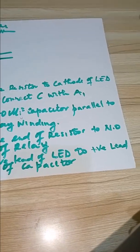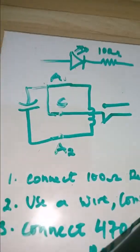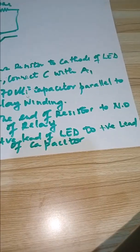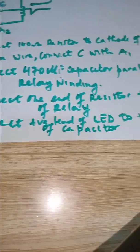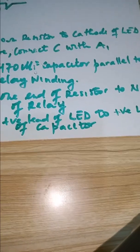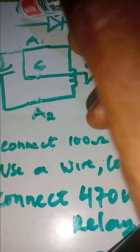And then the fourth step will be to connect one end of the resistor to the normally open contact of the relay, just like this. And then the fifth step will be to connect the positive lead of the LED to the positive lead of the capacitor, just like this.